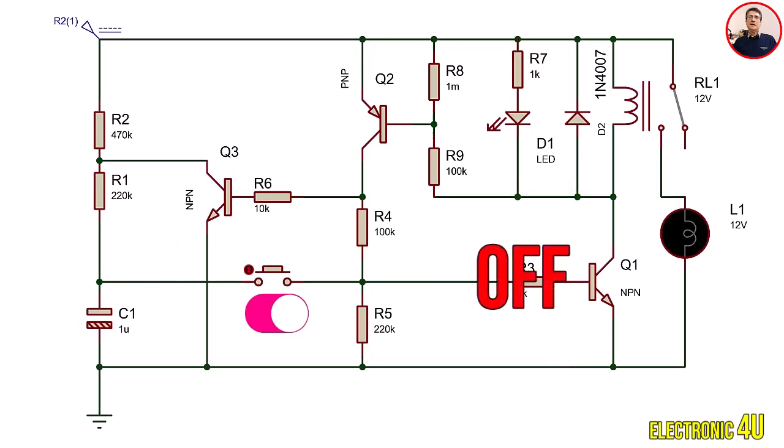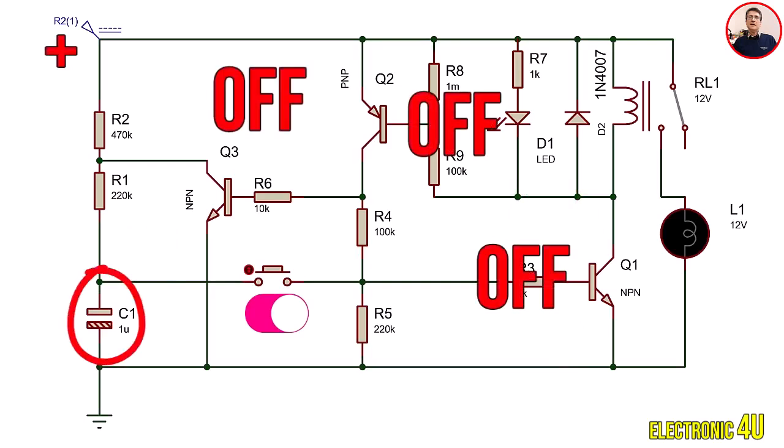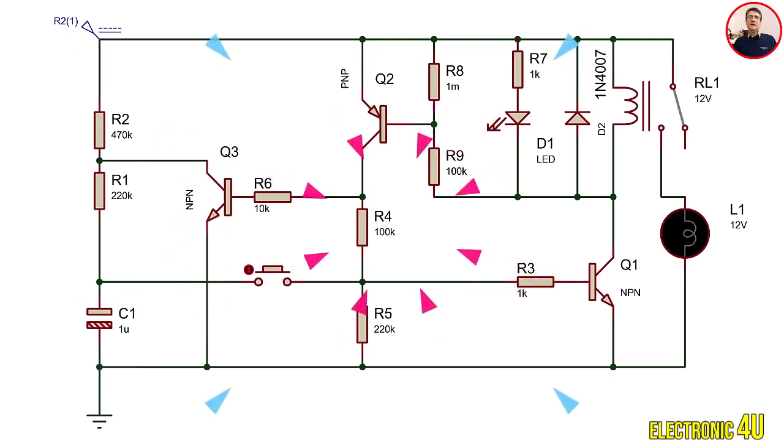With Q1 off, Q2 and Q3 also turn off, and voltage once again reaches the capacitor via resistor R2 and R1, recharging it. And the cycle keeps repeating.